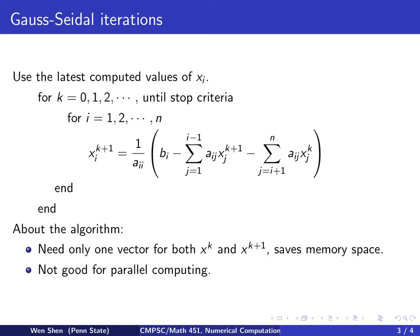So we actually need only one vector to store information for both xk and xk plus 1, because we simply overwrite. That saves memory space. And also later we'll see the method actually converges a bit faster.